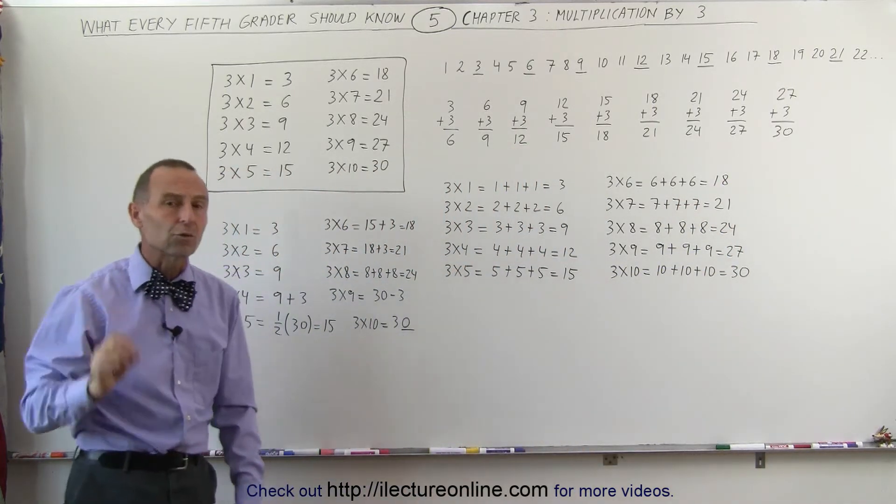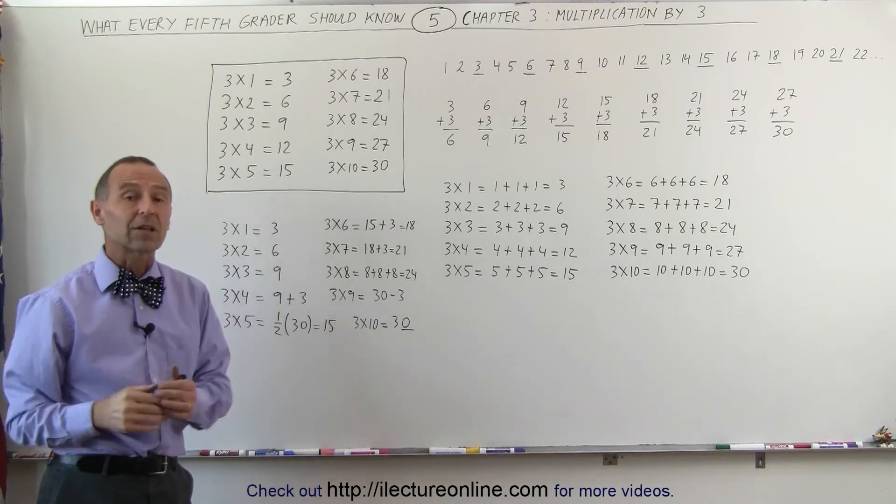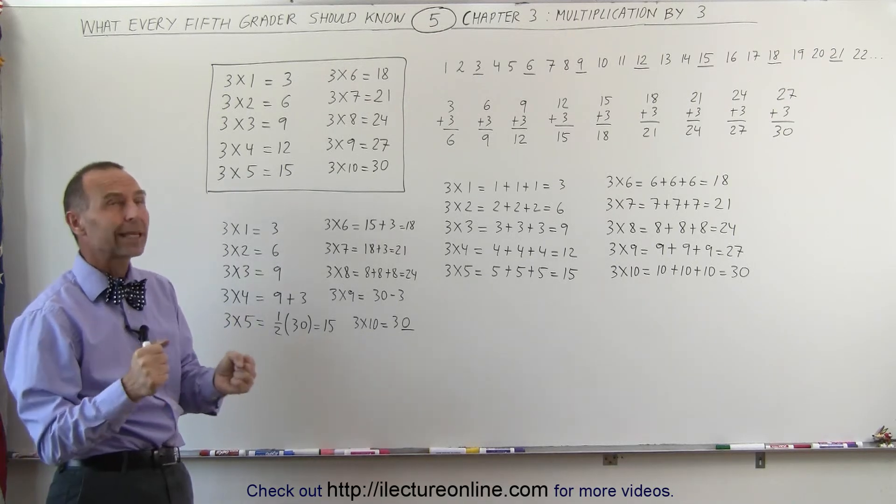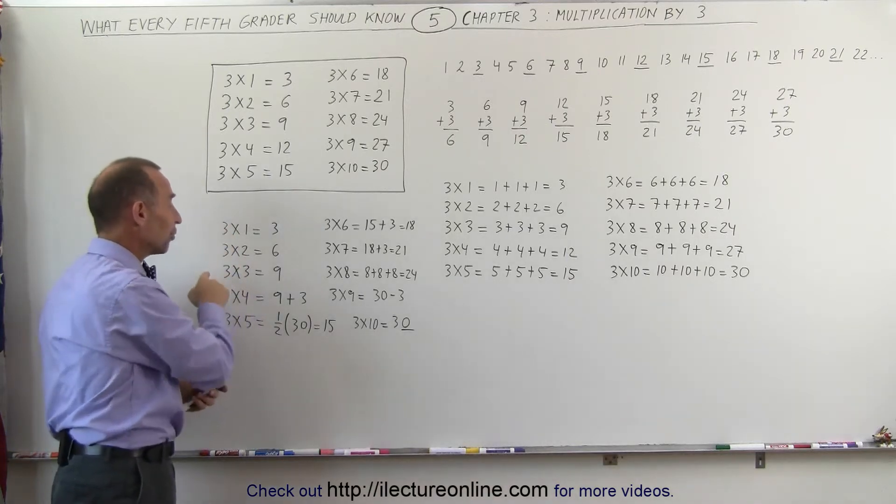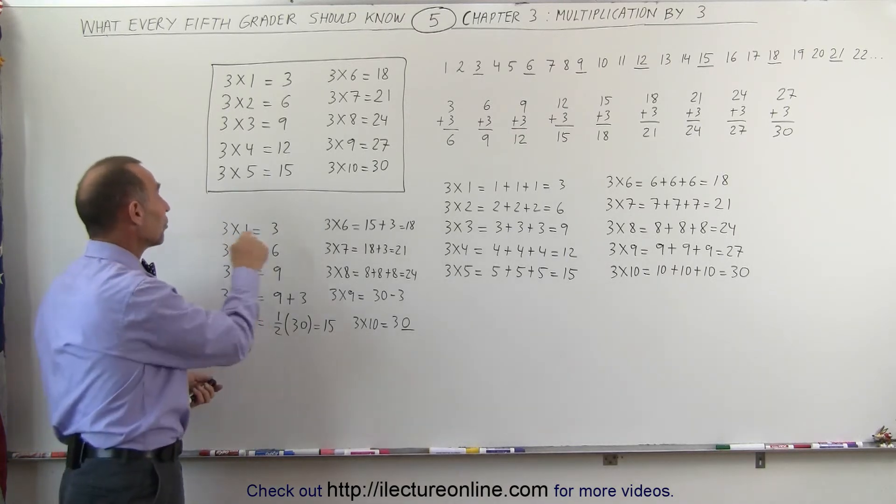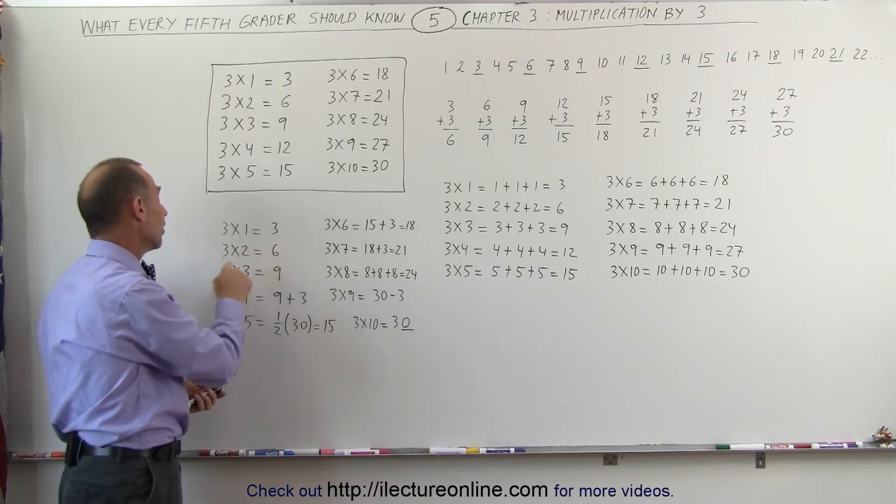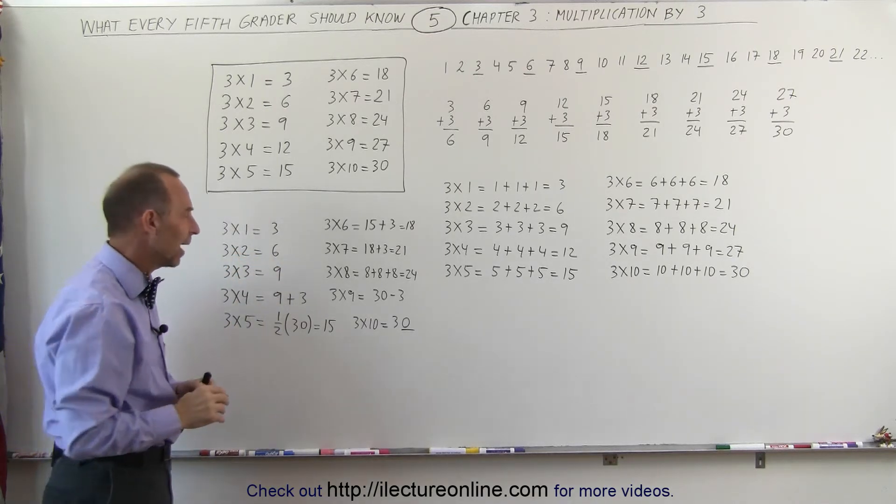Sometimes we need little tricks because if someone says, what is 3 times 6, you sit there and go, oh I can't remember. But then there's some tricks to use. For the first three it's fairly easy. 3 times 1 is 3, 3 times 2 is 6, 3 times 3 is 9. Most of us can easily recognize that.